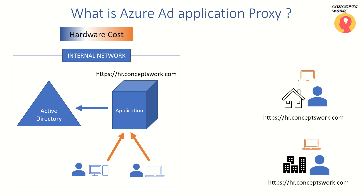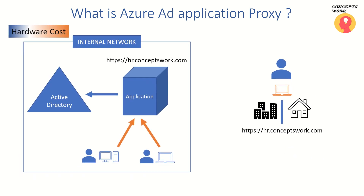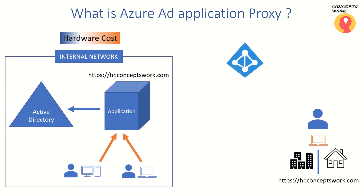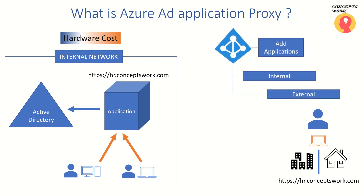So now, if we talk about how it is going to work if you use Azure AD Application Proxy — the first fundamental is you have to add an application in Azure Active Directory. When you choose the option of Azure AD Application Proxy, there are two options which are exceptionally important: the internal URL and the external URL. The internal URL will be the same URL with which the application can be accessed — in this case, hr.conceptswork.com. The Azure AD portal itself will give you the option to create an external link for your application.